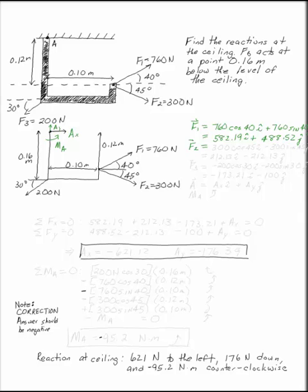F2 is 300 newtons cosine 45 in the i direction and then minus 300 sine 45 in the j direction.